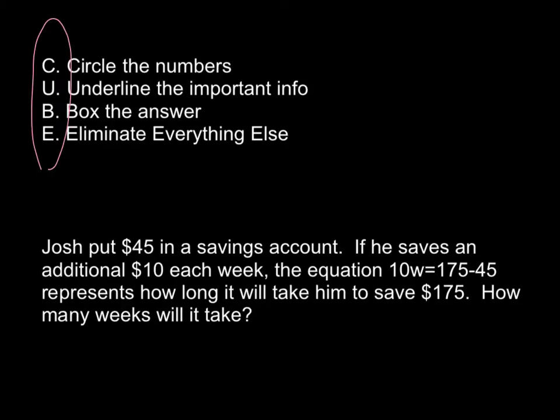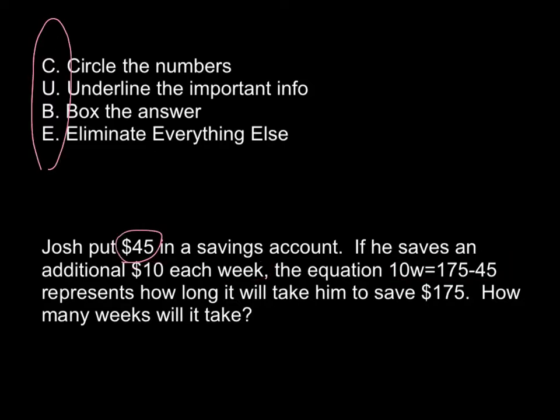First things first, we need to circle all the numbers in the problem. So we have $45, $10, the equation 10w equals 175 minus 45, and $175.